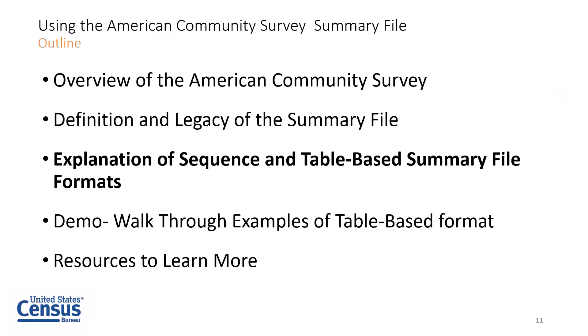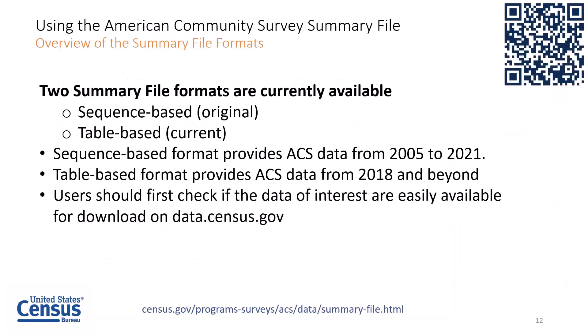There are currently two systems of the summary file. However, that will change with the release of the 2022 ACS data where we'll have just one format. One format is called the sequence-based format and the other is called the table-based format. The table-based format is recommended for the 2021 data release, and it will be the only format starting with the 2022 data release.